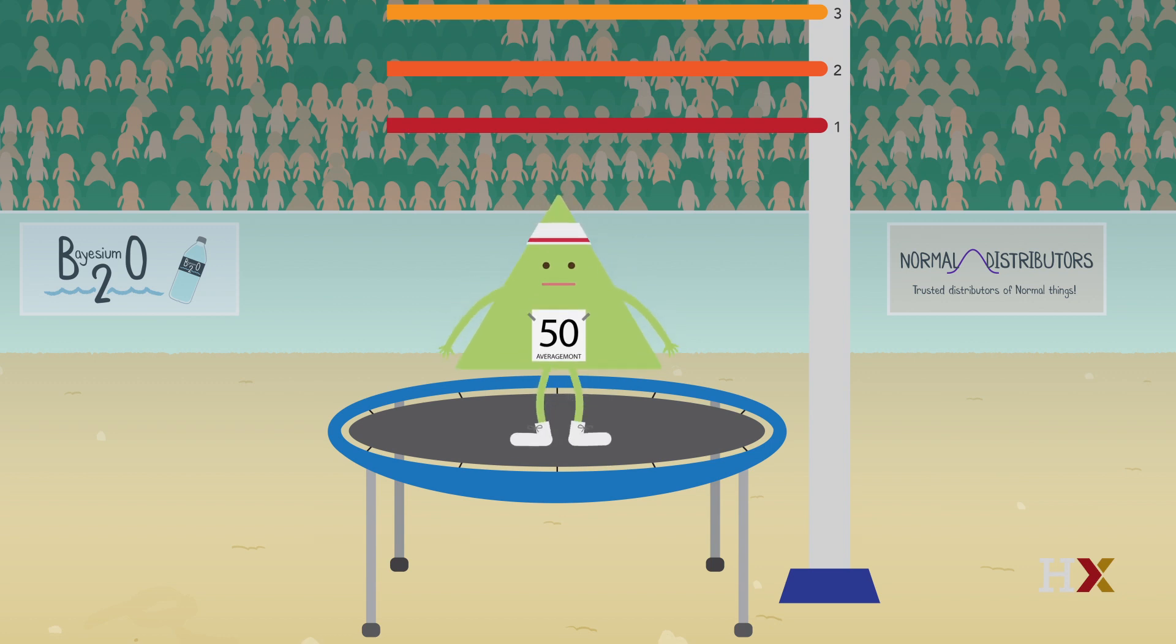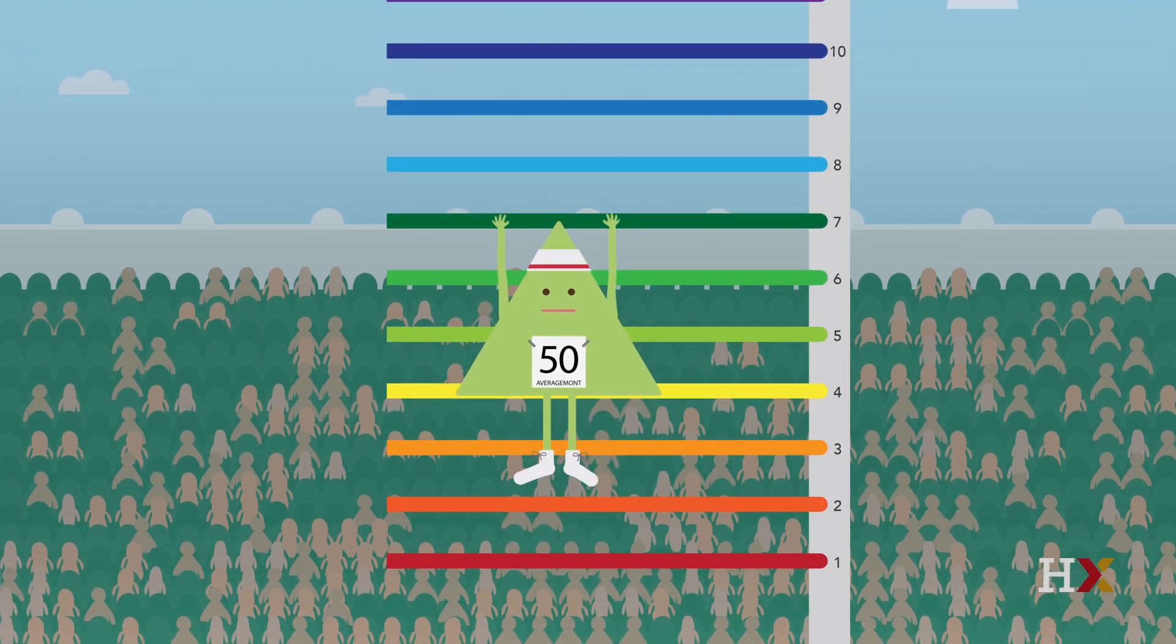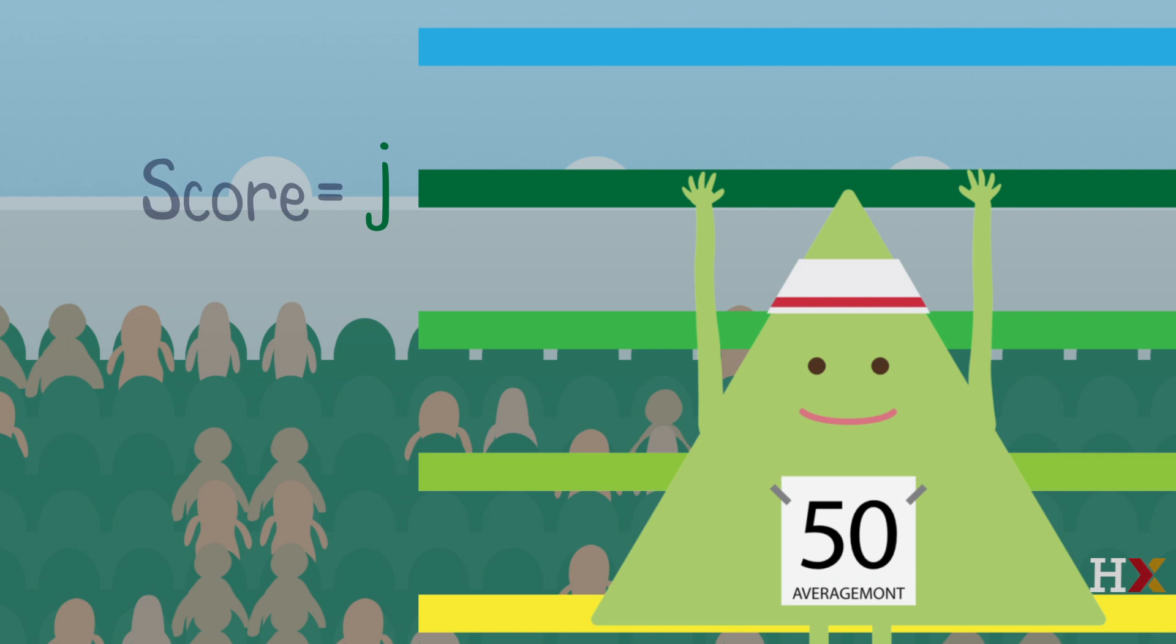In extreme barring, or X-Barring for short, the competitor jumps as high as they can and grabs onto the highest bar they can reach. If they grab bar J, their score is J.